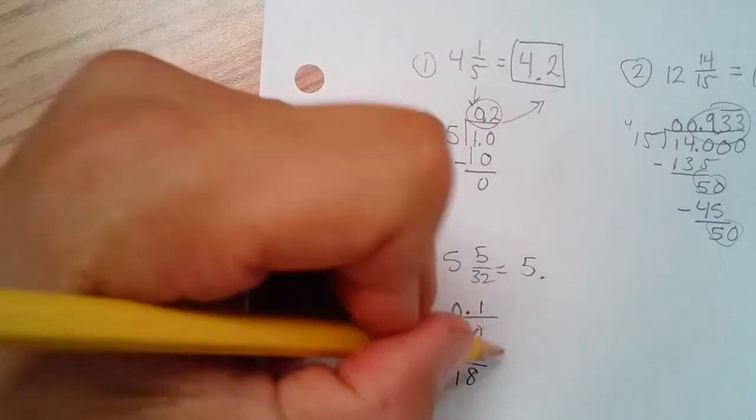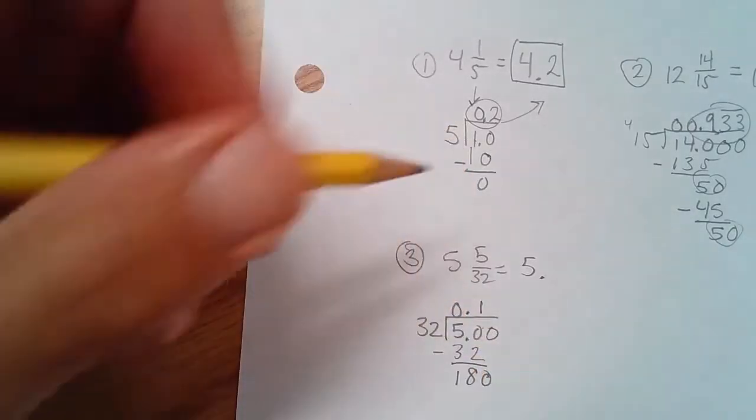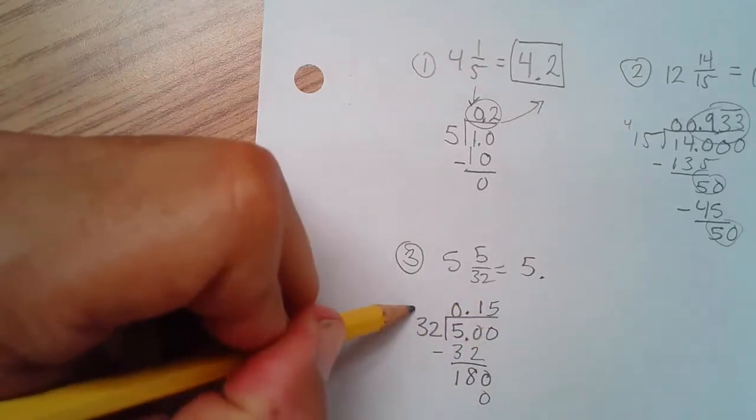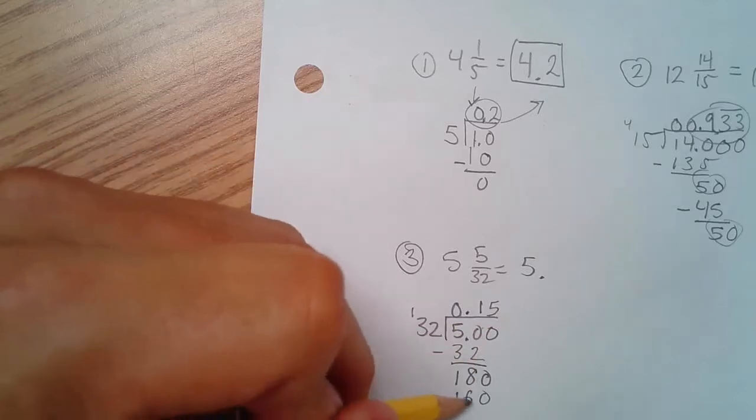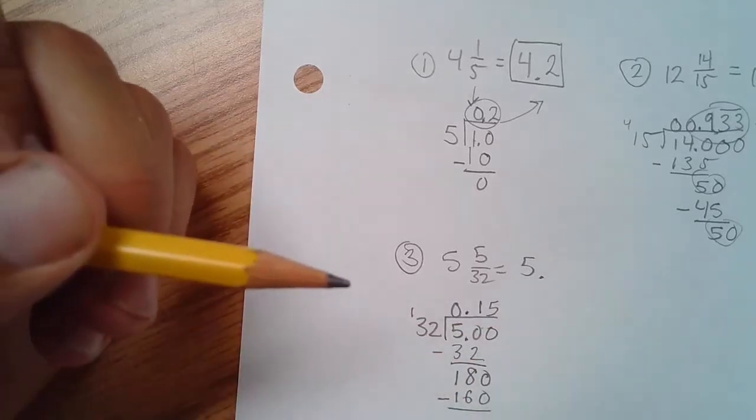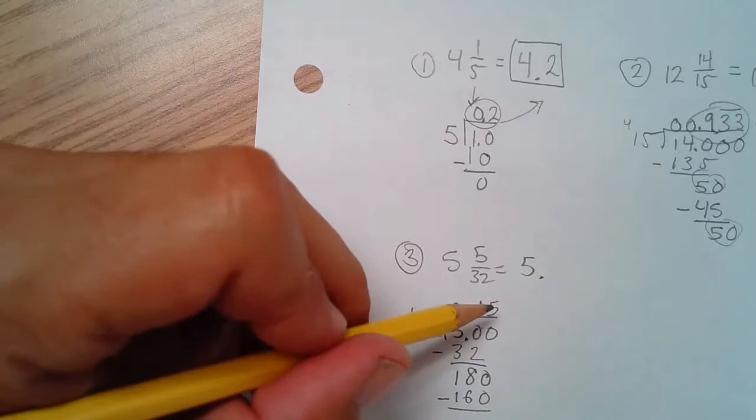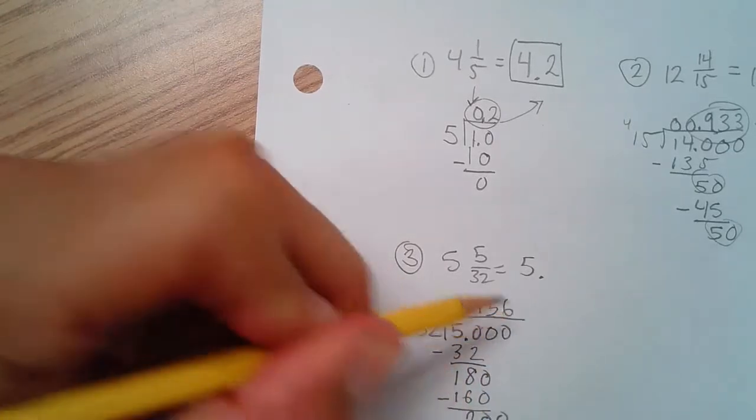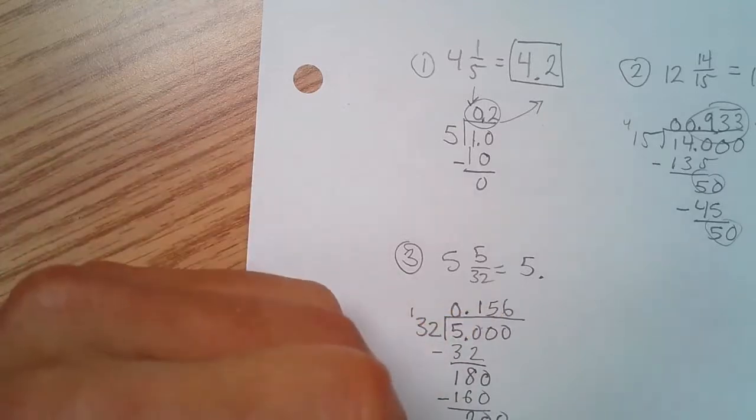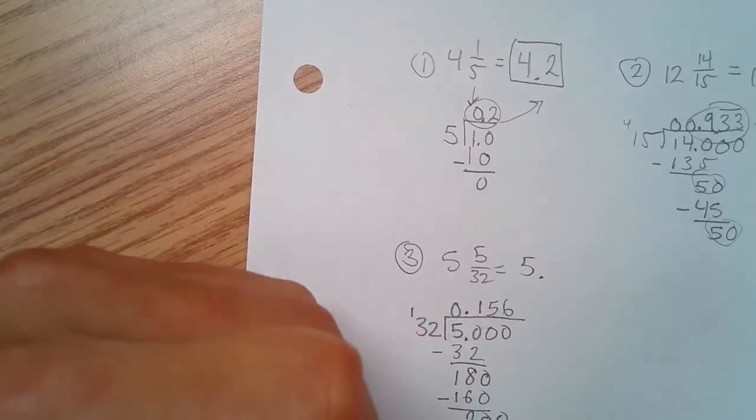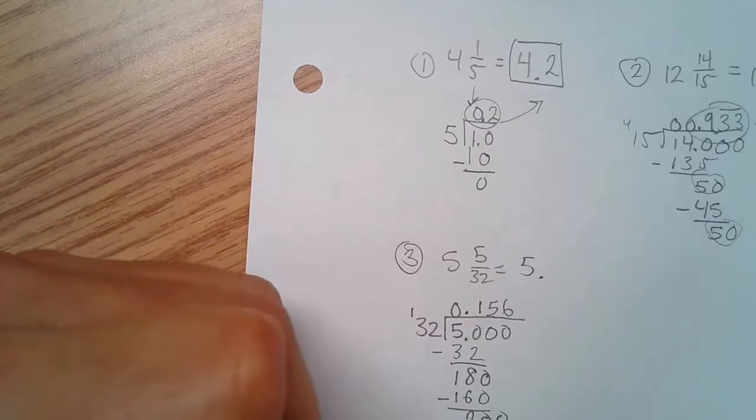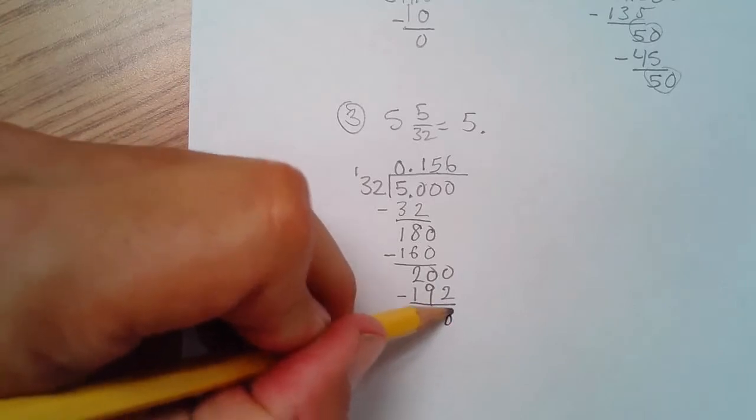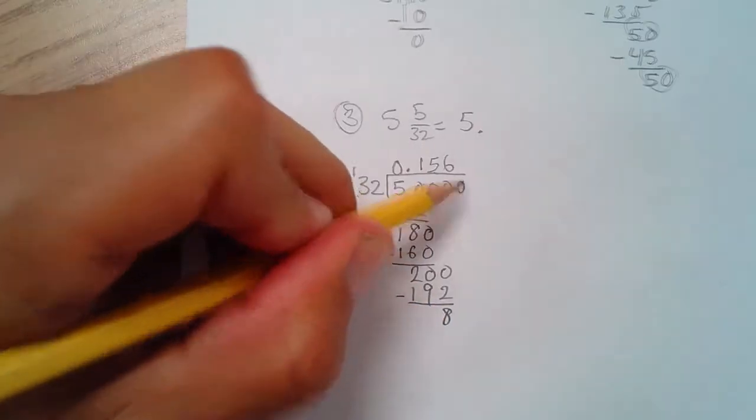And 32 goes into 50 one time. That's 32. This is 18. Drop the zero down. I think this goes in five times. That's zero, one, and that's 160. So that is 20. And this looks like it goes in six times. That is 12, 18, 19. So this result is 80.